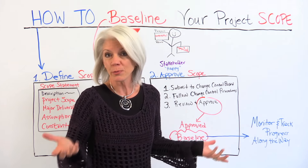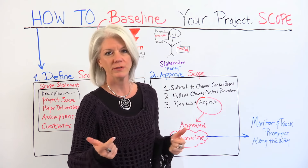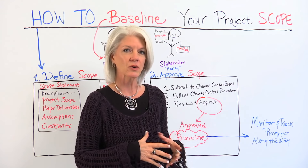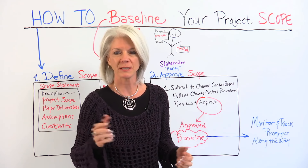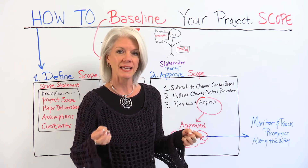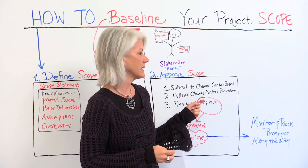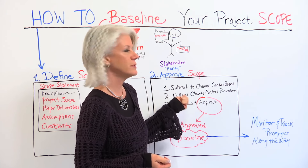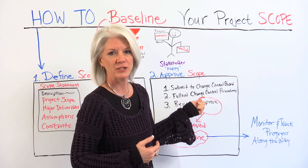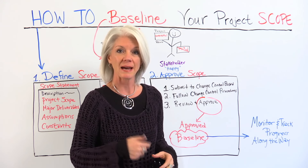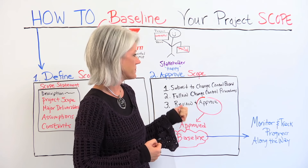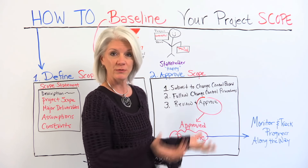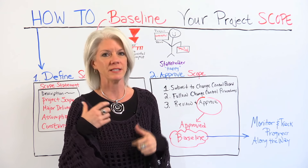How do we approve it and who approves it? The stakeholders approve it — generally one or multiple stakeholders depending on the size of the project. This group is usually called the change control board. The change control board uses the documented change control processes for that project or organization to review the scope.